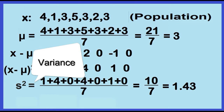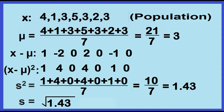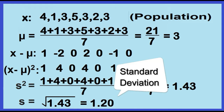Fifth, find the square root of the average of the squared deviations. The square root of 1.43 is equal to 1.20.